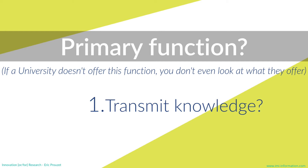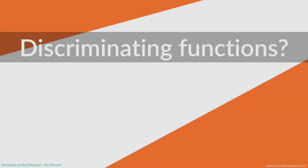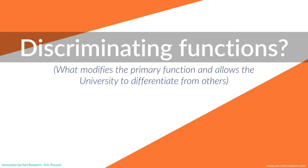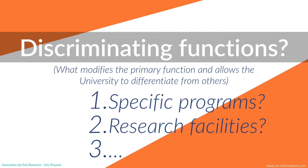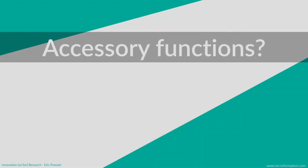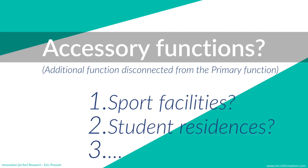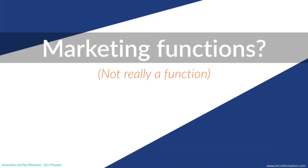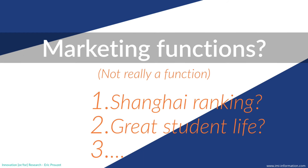Is the primary function of a university to transmit knowledge? That was its function for many years, but now knowledge can be found for free on the internet. Has that primary function changed? Is the primary function of a university now to deliver degrees? The discriminating function — what modifies the primary function and allows a university to differentiate — could include specific programs or research facilities. The accessory function, disconnected from the primary function, includes sport facilities or student residences, which allow you to enjoy life but are disconnected from either transmitting knowledge or delivering degrees.